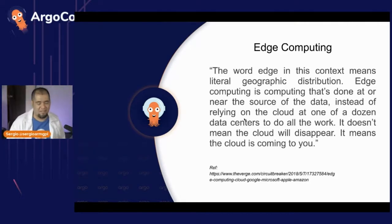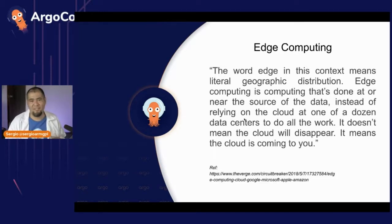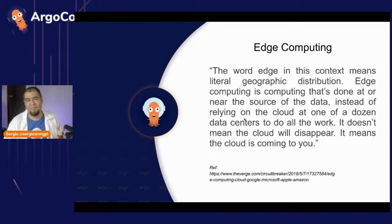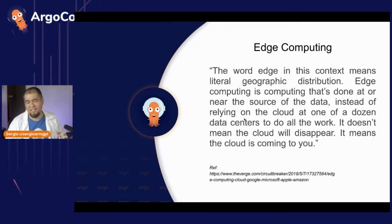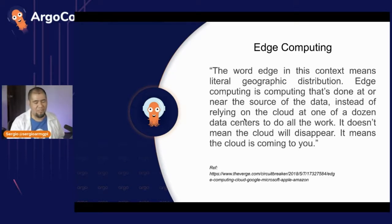Right now everything is about artificial intelligence. So it's better to process information locally, or maybe send data to the cloud, do the heavy work there, and consume machine learning models. The point is also to distribute the work — that's the goal of edge computing.